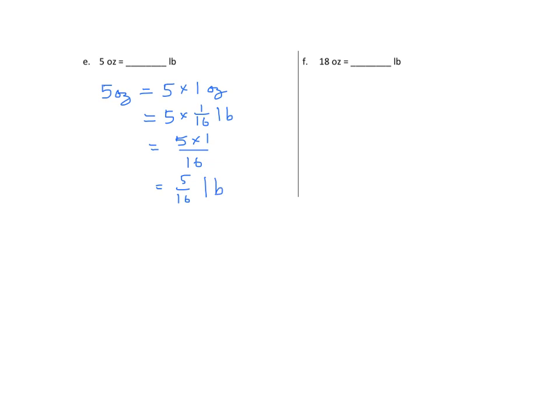Again, ounces to pounds. 18 ounces equals 18 times 1 ounce equals 18 times 1 sixteenth of a pound equals 18 times 1 over 16. We can find a common factor of 2 in 18 and 16. We get a 9 and we get an 8. And that equals 9 eighths. Equals 1 and 1 eighth pound.